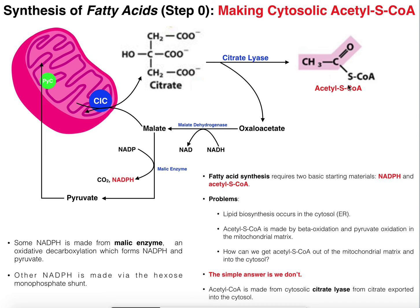So this is how we get everything out into the cytoplasm — and the remains, malate and pyruvate, end up going back into the mitochondria by different mechanisms. Now we have our acetyl-CoA and our NADPH, and this is one source of NADPH for fatty acid synthesis, which requires a lot of it as we'll see in upcoming videos. Malic enzyme is one source. The other source of NADPH is through the hexose monophosphate shunt, also called the pentose phosphate pathway — the sister pathway to glycolysis. That pathway is also a major source of NADPH and is also a cytosolic pathway that occurs alongside glycolysis.